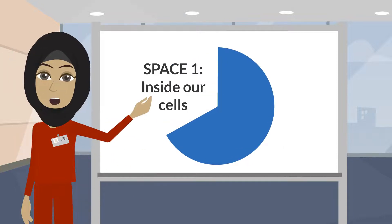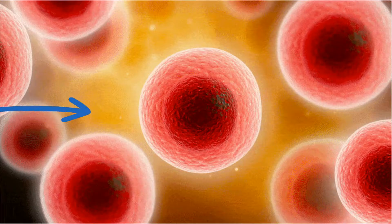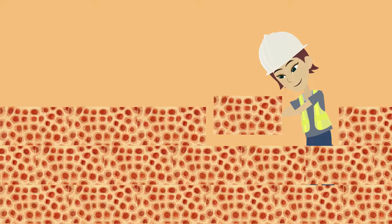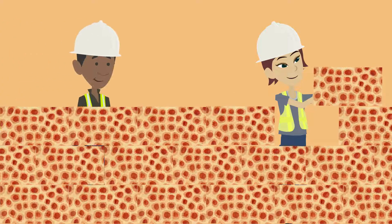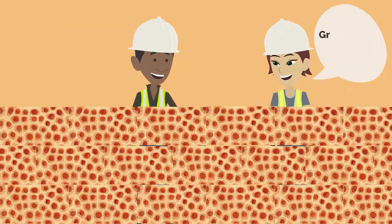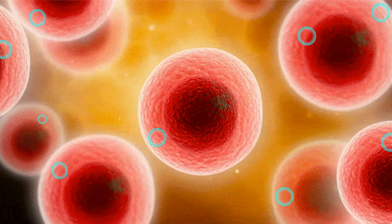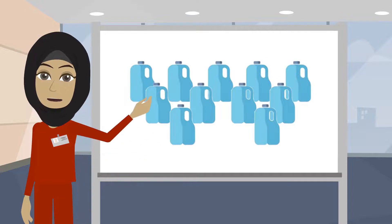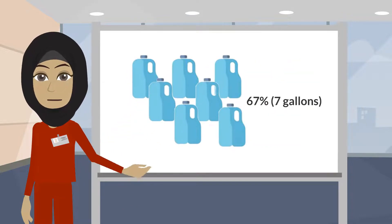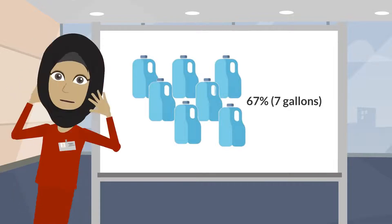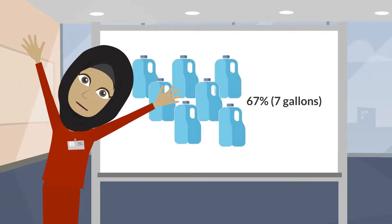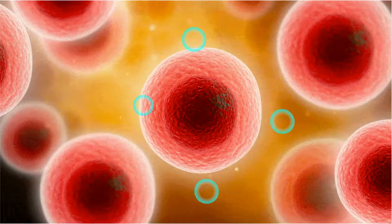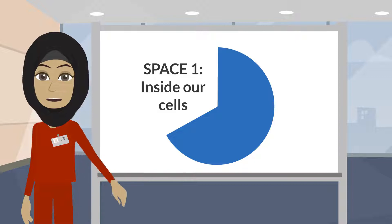Space 1, or the intracellular space, is the space inside our cells. Cells are our body's building blocks — we can have as many as 37 trillion cells, and each cell contains some water. Of the 42 liters of water in our body, 67%, or about 7 gallons, is inside our cells. That is more than half of all the water in our body. Water is always slowly entering and leaving the cell through the cell wall.